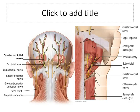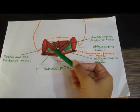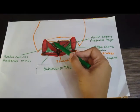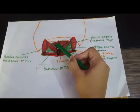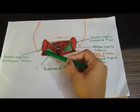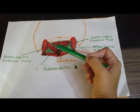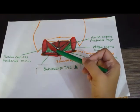Superficial fascia also contains the occipital artery and accompanying vein, which we will discuss later. Let us discuss the boundaries of the suboccipital triangle. As you can see in the diagram, the suboccipital triangle is bounded superomedially by the rectus capitis posterior major muscle and rectus capitis posterior minor muscle, and superolaterally it is bounded by the oblique capitis superior muscle.